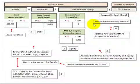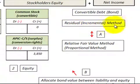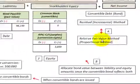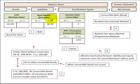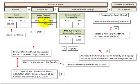Here we're going to look at two different methods for assigning the value of convertible bonds or convertible debt. The first method will be the residual or incremental method, and then we're going to compare that with the relative or fair value method or proportional method. When we have convertible debt — debt that bondholders can convert into equity or common stock — we have to assign a liability or debt amount to that convertible security and also an equity portion.